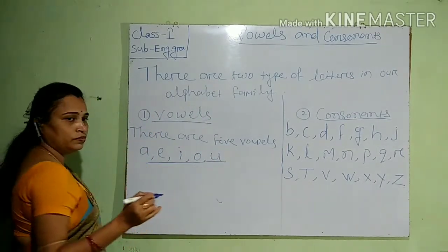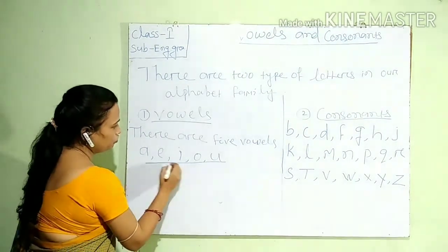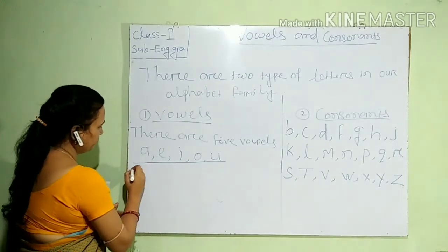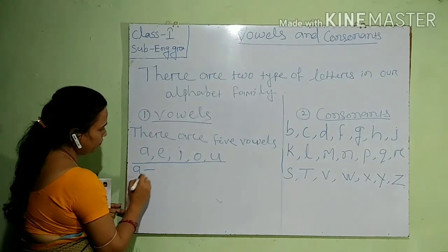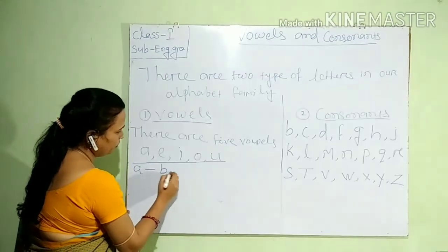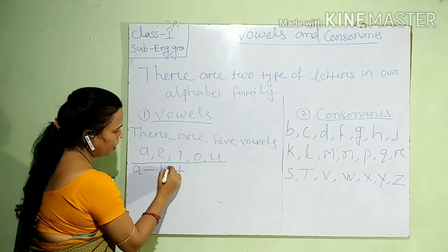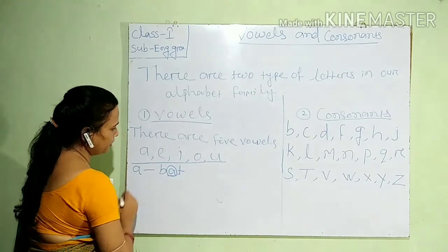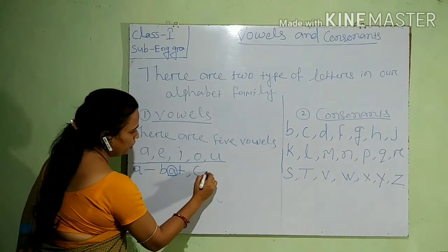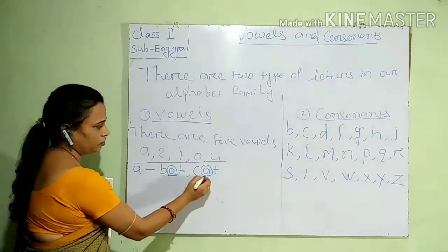So let's do some words using these vowel letters. A sound words: B, A, T — BAT. A vowel sound words. Then C, A, T — CAT. A, A.